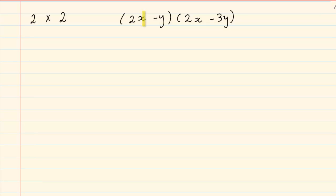If we were using the distributive law we would have said 2x and then we would have distributed it with the 2x and the minus 3y in the following bracket. Or we would have continued and we would have said minus y and we would have distributed it with the 2x and the negative 3y in the following bracket.